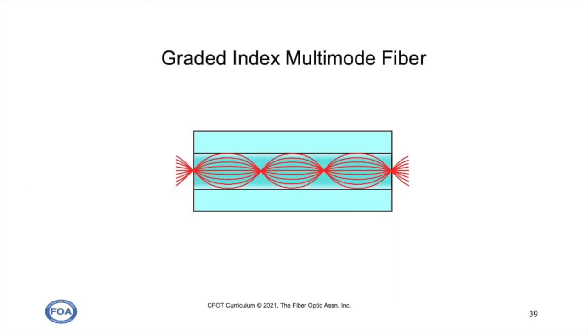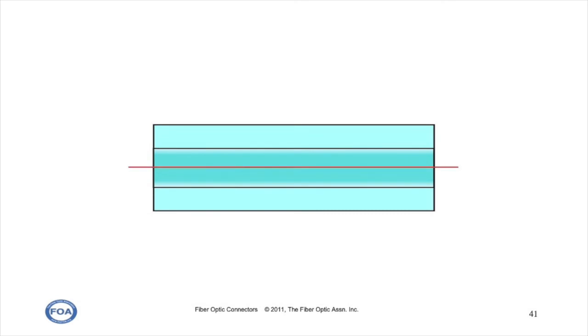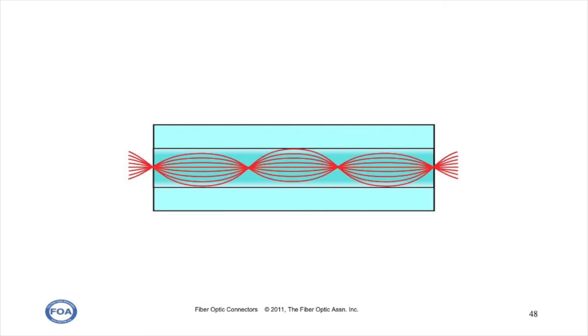Here's the typical diagram you see of multi-mode fiber. The difference in the index of refraction across the core causes all the modes of light in the core to essentially take the same amount of time to get from point A to point B, meaning that graded index multi-mode fiber has a much higher bandwidth than step index.